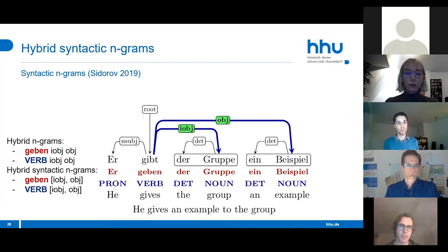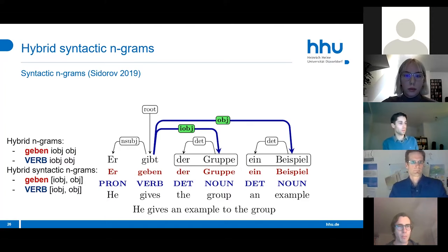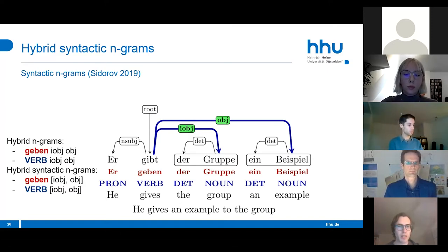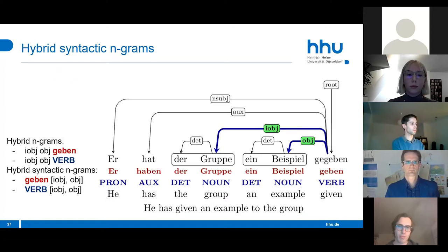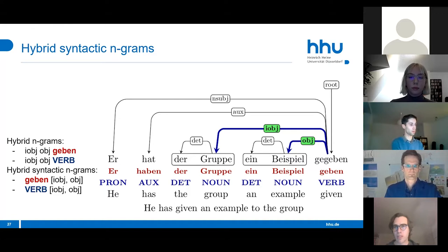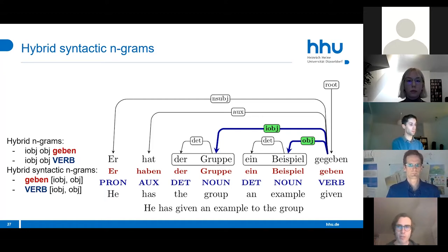From the German sentence 'he gives an example to the group', we use hybrid syntactic n-grams consisting of the verb 'geben' (to give), the indirect object, and the direct object. The trigram and the hybrid n-gram are similar because the linear order here is the same as the dependency order. However, in the German perfect tense the main verb appears at the end of the sentence, so the order in the linear n-gram is reversed, but it stays the same when using syntactic n-grams.